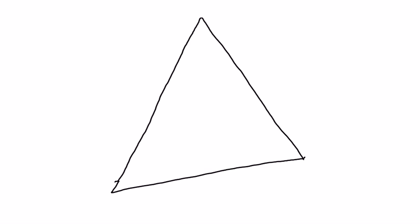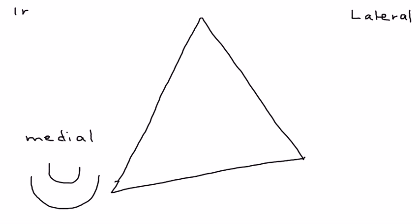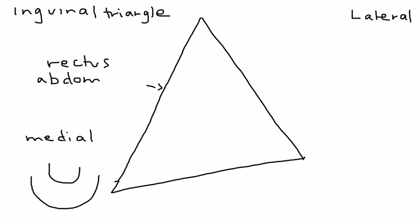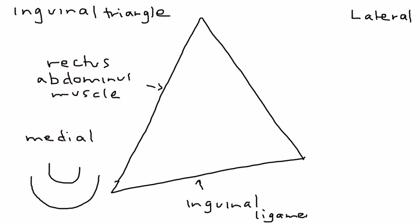To explain what is going on, we need to draw some anatomy. This is the area of the genitalia — the medial side and the lateral side — and this is known as the inguinal triangle. This side is the rectus abdominis muscle, this side at the bottom is the inguinal ligament, and this side represents the inferior epigastric vessels, the artery and the vein.